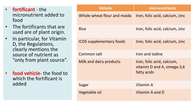The micronutrients added to food are known as fortificants. The fortificants that are of plant origin — particularly for vitamin D — are clearly mentioned in regulations as being sourced only from plant sources. The food to which the fortificant is added is known as the food vehicle.